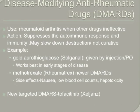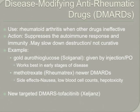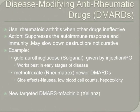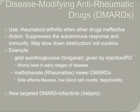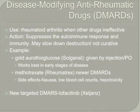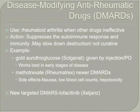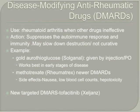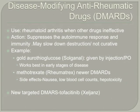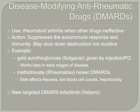DMARDs, or disease-modifying anti-rheumatic drugs, are used in rheumatoid arthritis when other drugs are ineffective. They suppress the body's overactive autoimmune and inflammatory systems. These drugs may slow down joint destruction, but they're not a cure, and they're often used in combination with other medications. Traditional DMARDs restrict the immune system broadly. Gold, or aurothioglucose, is a DMARD given by injection or orally, and works best in the early stages of the disease. Methotrexate is one of the newer, more effective traditional DMARDs. Side effects include nausea, low blood cell counts, and hepatotoxicity. Because these medications suppress the immune system, individuals have a higher risk of getting sick and must take care to stay away from people who are ill.